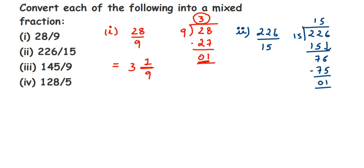Now writing the mixed fraction: 15 is the denominator, so we get 15 in the denominator. The whole number is the quotient, which is 15. The numerator is the remainder, which is 1. So 15 1/15 is the mixed fraction for 226/15.